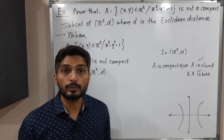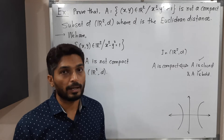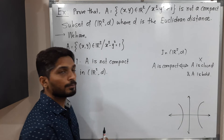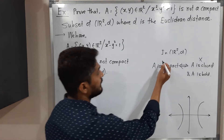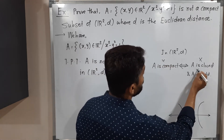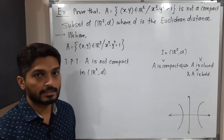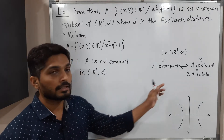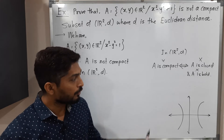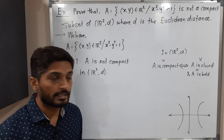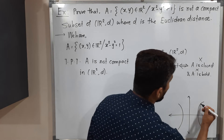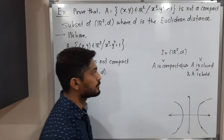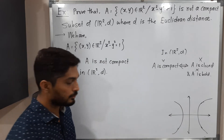Now here we have to prove that the set is not compact. That means we have to prove either the set is not closed — then we say the set is not compact — or if the set is not bounded, then also we can say the set is not compact. So here we are going to prove that the given set A is not bounded. From this diagram also you can easily guess it is not bounded; it is going to infinity on all sides. So I am going to prove that the set A is not bounded.